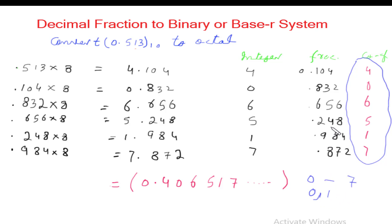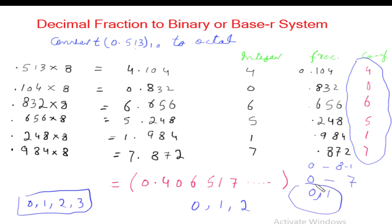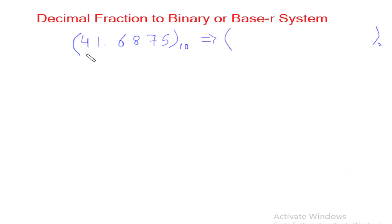In general, the coefficients found from the integers may range in value from 0 to r − 1. For octal (r = 8) they range from 0 to 7. For binary (r = 2) they range from 0 to 1. For ternary (r = 3) they are 0, 1, 2. For base 4 they are 0, 1, 2, 3. So these are the coefficient ranges for each base.